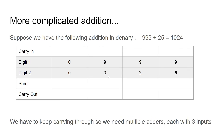Half adders are great if you're only adding two single-digit numbers together. But when you start to do bigger numbers, things get a little more complicated. Take, for instance, this decimal number: 999 plus 25. Well, that equals 1024.